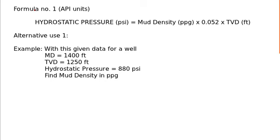This is your same good old formula number one for API units. This formula is used to calculate hydrostatic pressure if you know mud density at any particular TVD. This formula can alternatively be used to find the quantities on the right side, mud density or TVD, if you know hydrostatic pressure and one of the two quantities on the right side.